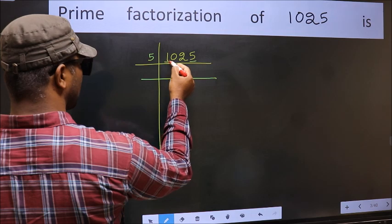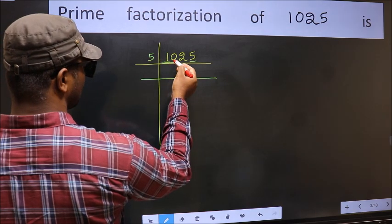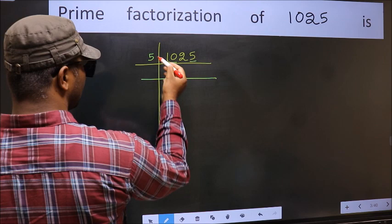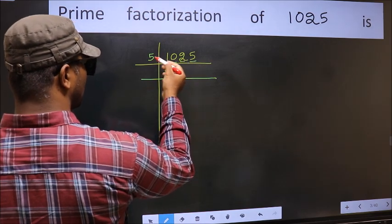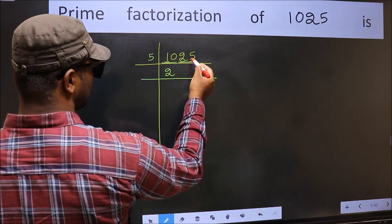First number 1, smaller than 5, so take 2 numbers 10. When do we get 10 in 5 table? 5 to 10. The other number 2, smaller than 5, so take 2 numbers 25.